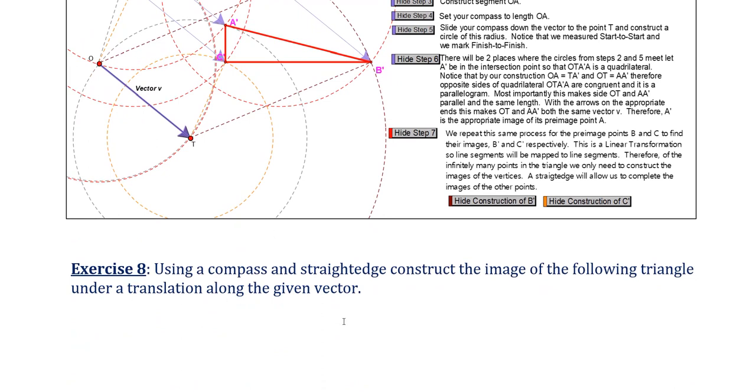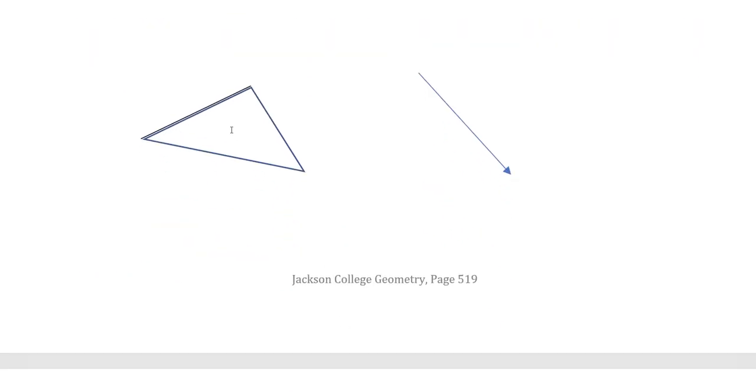The exercise that you need to do is with the compass and straight edge, just draw some triangle as best if it's not a special kind, like make it a scalene triangle. That'll be the best. So all the sides are different lengths. And all the angles are different sizes. And then draw a vector just over here somewhere. And then use your compass and straight edge to physically draw that.